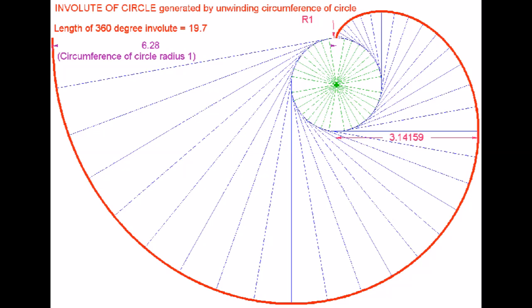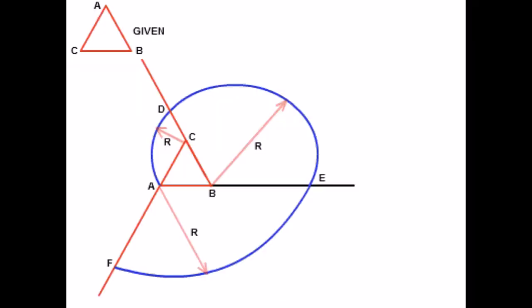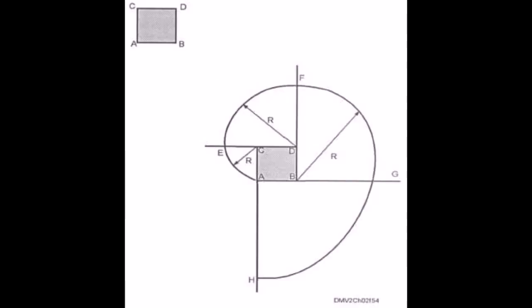In the differential geometry of curves, an involute is a curve obtained from another given curve by attaching an imaginary taut string to the given curve and tracing its free end as it is wound onto that given curve, or in reverse, unwound. For example, an involute approximates the path followed by a tetherball as the connecting tether is wound around the center pole.